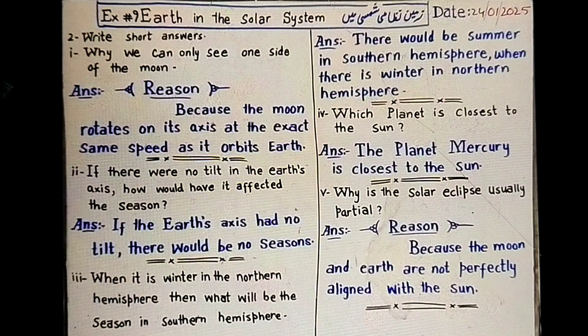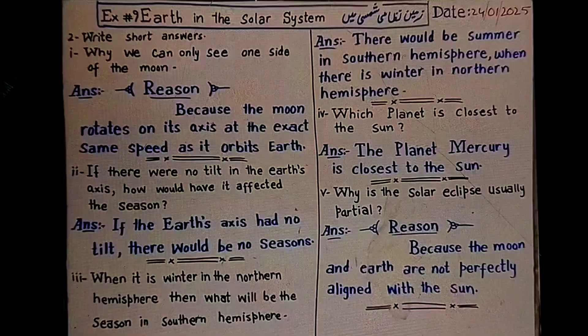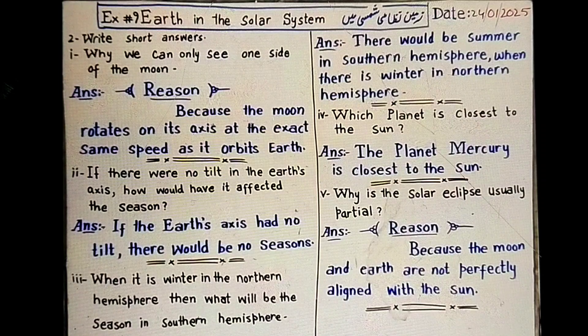The last question is: why is the solar eclipse usually partial?